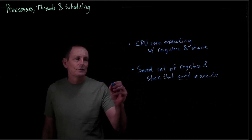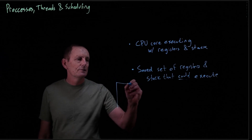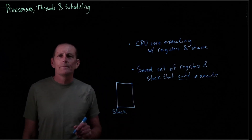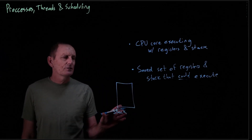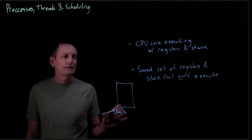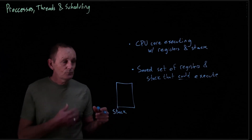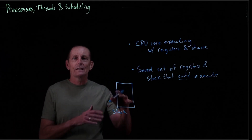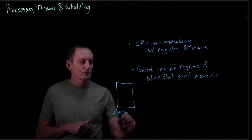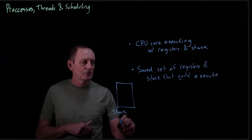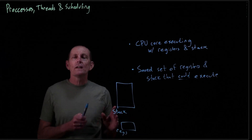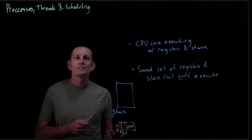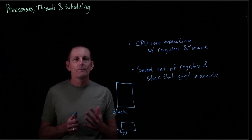For example, imagine we have a stack, and this is going to represent the running thread. So we've got our stack, it's being executed, we've got some registers. And then all of a sudden, we want to stop running this thread and start running another thread.